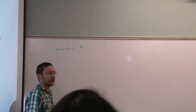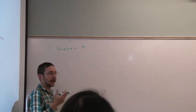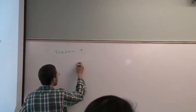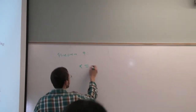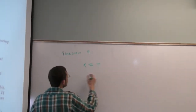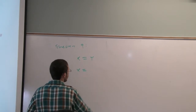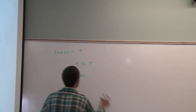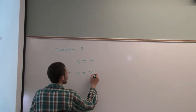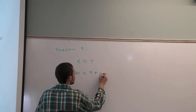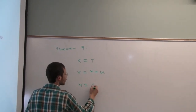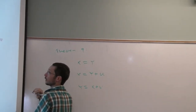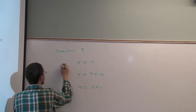We're saying pick any two natural numbers. There has to be a relationship between them. Specifically, either x is equal to y, or x is y plus u, or y is x plus v. One of these three things must hold.